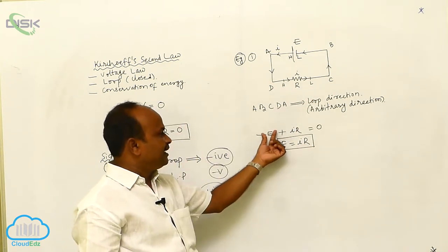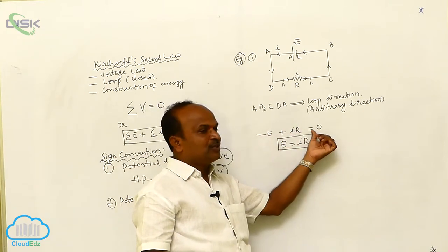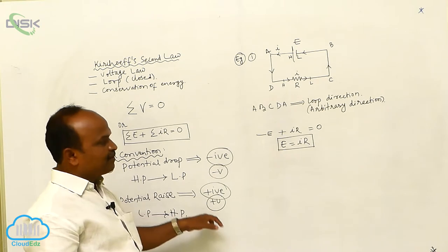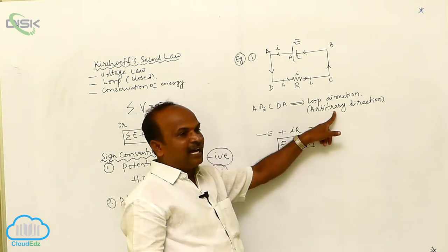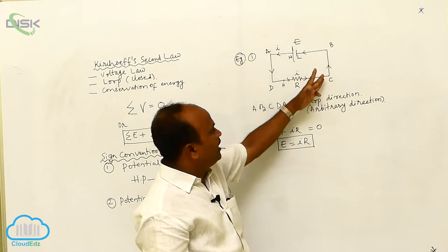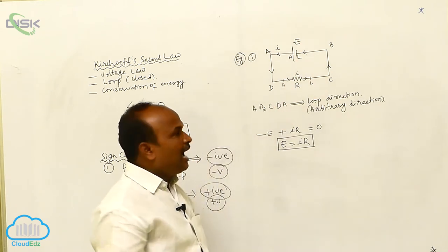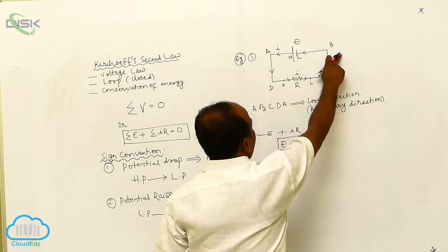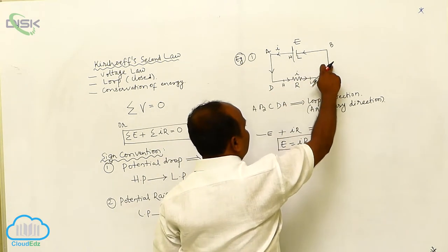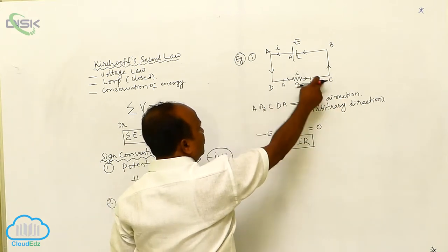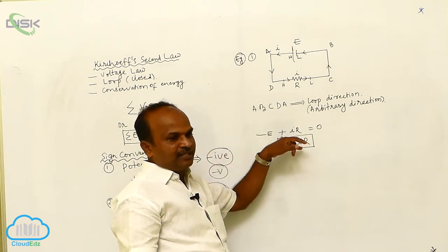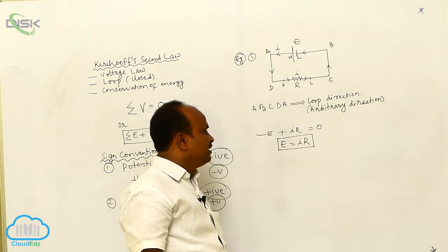E is written such that the potential difference is taken as I times R equals zero. The sign convention is: potential drop is taken as negative and potential rise is taken as positive. Traveling along the arbitrary direction A, B, C, D, A — from A to B is higher to lower, taken as drop, which is negative. Continuing from lower to higher, there is a potential rise, taken as positive, so I times R is positive. After simplifying, E equals I times R. This is a simple application of Kirchhoff's second law.